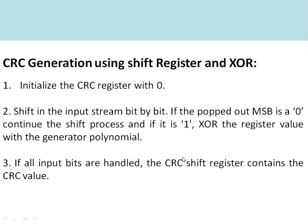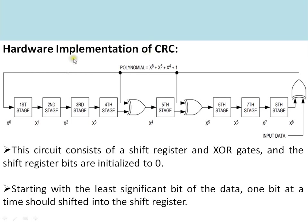Here we can see the hardware implementation. This is the 8-stage shift register — x0 to x7 are the bits, where x7 is the MSB and x0 is the LSB. These are the bits from the input that are fed into the shift register. The MSB bit is popped out, and this is the bit that determines whether to perform XOR or continue the shift operation. We will discuss this with an example.